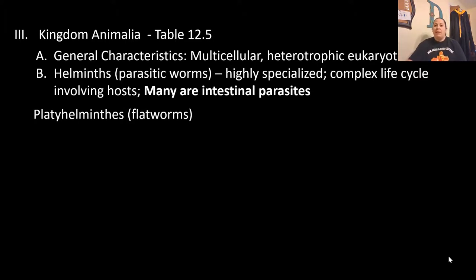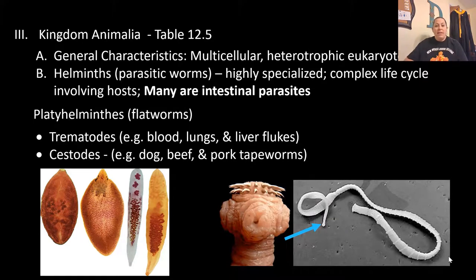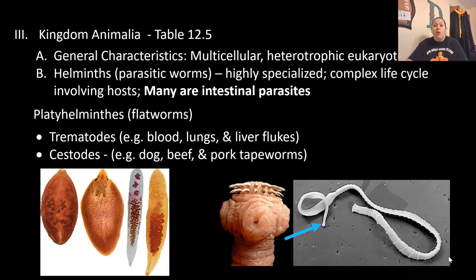One group is the Platyhelminthes — the flatworms. The trematodes are flukes — flatworms named based on the location they prefer: blood flukes, lung flukes, or liver flukes. The cestodes are tapeworms — dog, beef, and pork tapeworms. Tapeworms are flatworms but they are not necessarily small. Tapeworms can be longer than your intestines, which can be up to about 10 feet long. They are flat and ribbon-like — the tapeworm's head has hooks that help it hold onto your intestines so it can absorb the food you have digested, which is why it is a parasite.